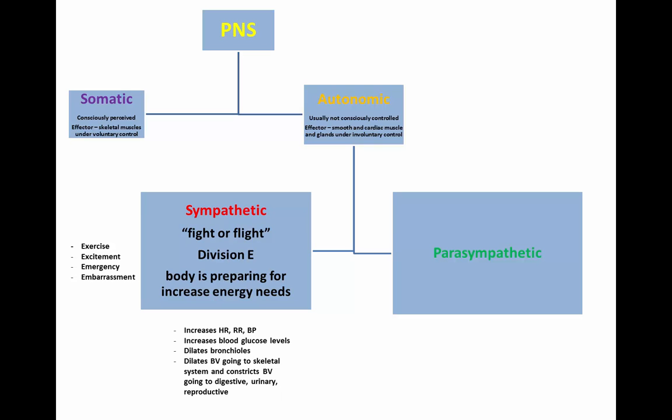The sympathetic division prepares the body for increased energy needs by increasing heart rate, respiratory rate, blood pressure, and blood glucose levels. It dilates bronchioles to increase oxygen levels to the lungs and into the bloodstream, dilates blood vessels going to the skeletal system, and constricts blood vessels going to the digestive, urinary, and reproductive systems, therefore decreasing their functions.